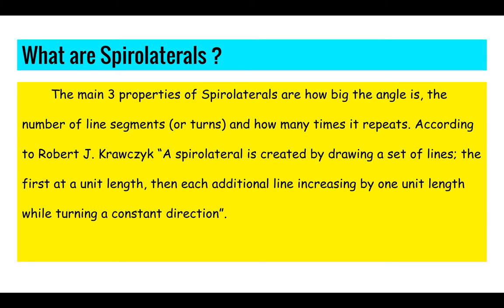The three main properties of Spiral Laterals are how big the angle is, the number of line segments or turns, and how many times it repeats. According to Robert J. Krauski, a Spiral Lateral is created by drawing a set of lines — the first at a unit length — then each additional line increasing by one unit length while turning a constant direction.